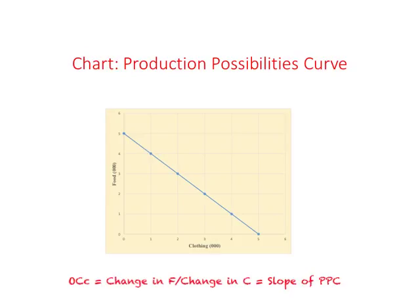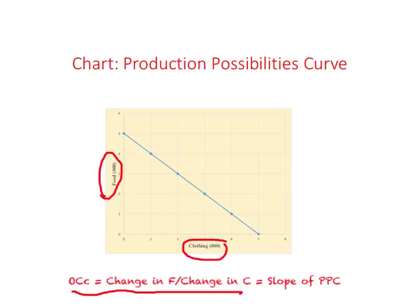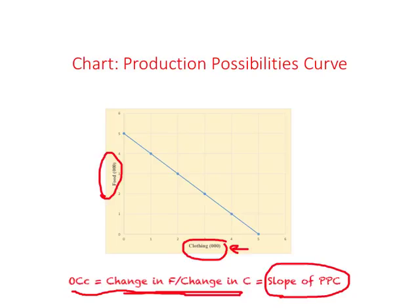Here is the PPC drawn based on the production possibility schedule. We calculated Opportunity Cost of Clothing as change in food divided by change in clothing. With clothing on the horizontal axis and food on the vertical axis, dividing change in food by change in clothing gives not just Opportunity Cost of Clothing but also the slope of the PPC. In other words, the slope of the PPC is the same thing as the Opportunity Cost of the good on the x-axis — in this case, clothing.